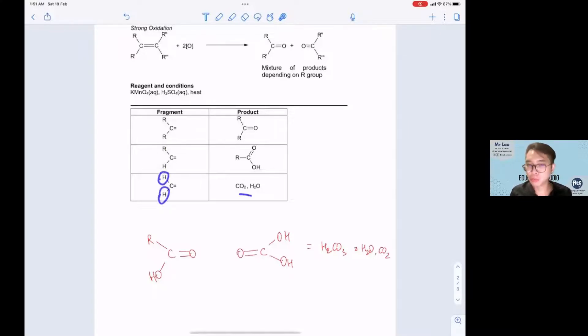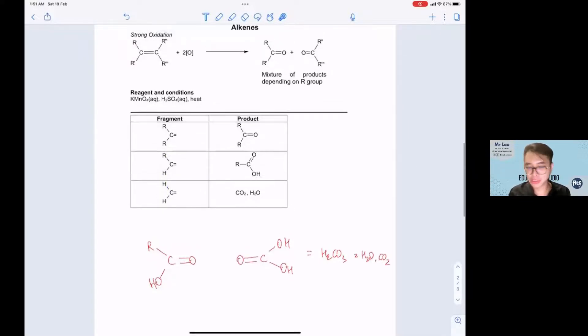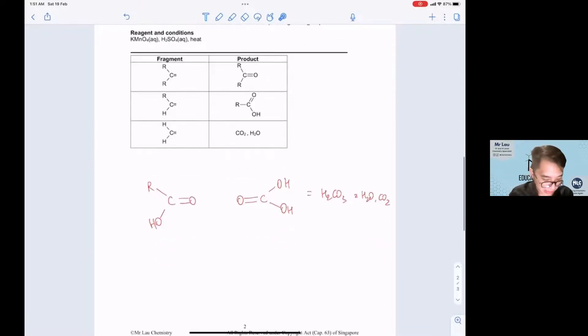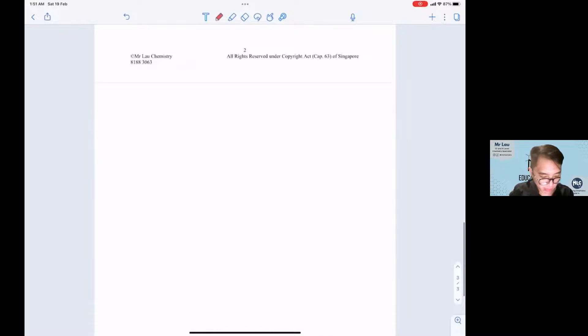If both are H, they will become CO2 and water. So this is how you visualize the oxidative cleavage process. Let me give you another example. Some students usually struggle with solving for cyclic compounds. So let's say this is an example. All you need to do is first indicate the H that is on the C=C double bond, break the bond.